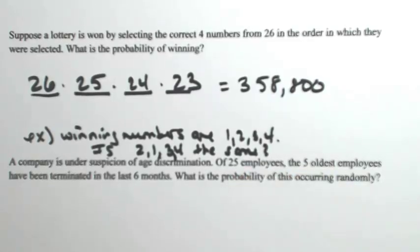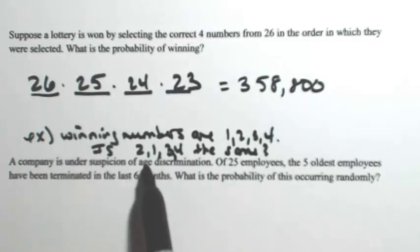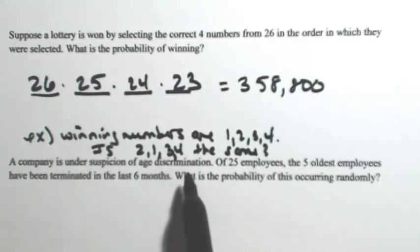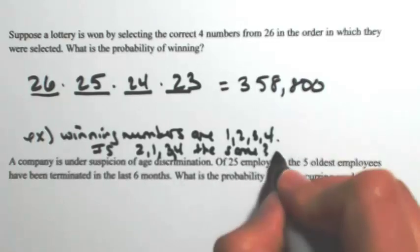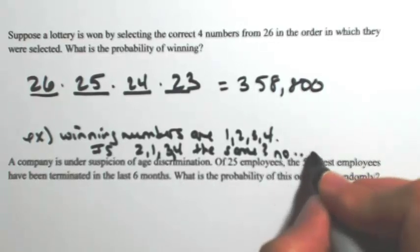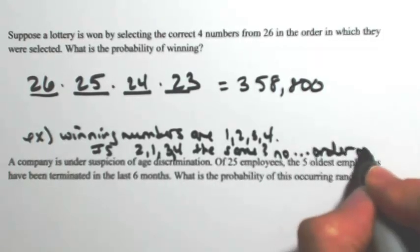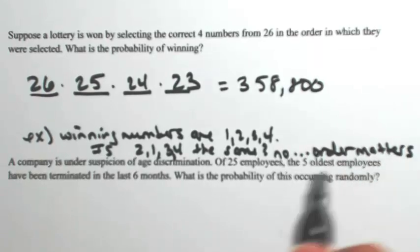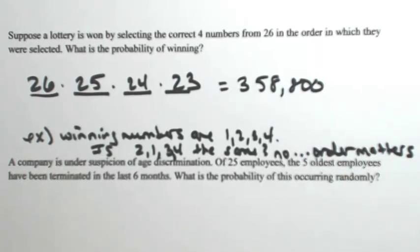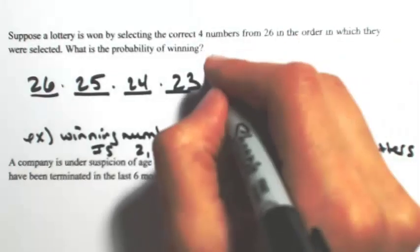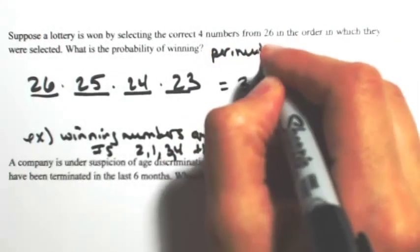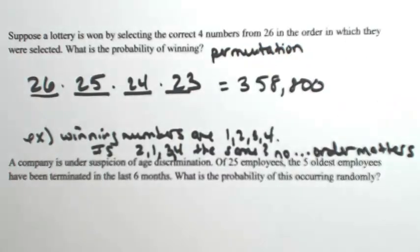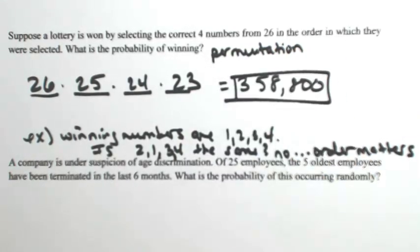So if we look back at the problem, it says we have to select the correct numbers in the order in which they were selected. So 2, 1, 3, 4 is not the same as 1, 2, 3, 4. So the order matters. So because the order matters and there are no repetitions of these numbers, this is called a permutation. The order matters, and so that's our answer.